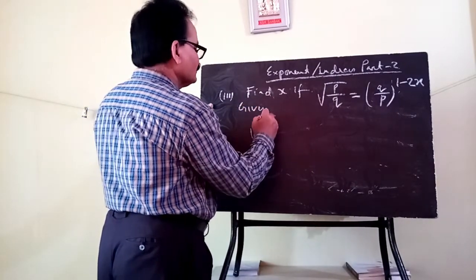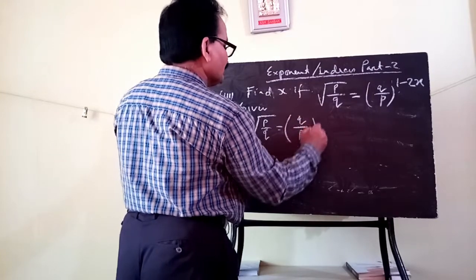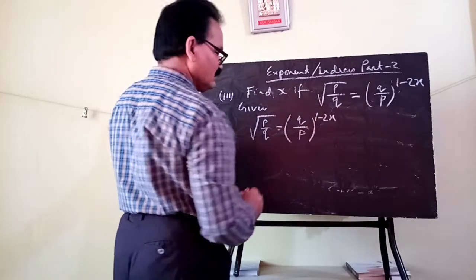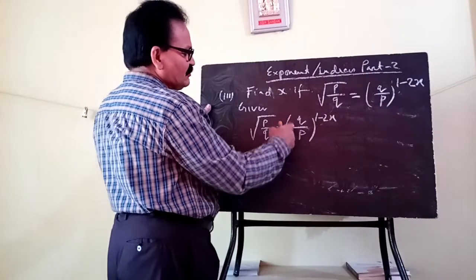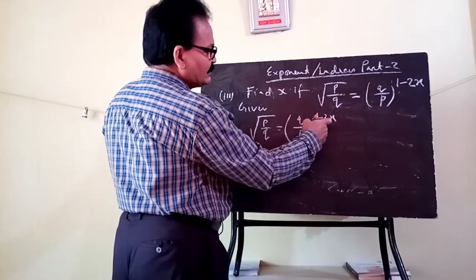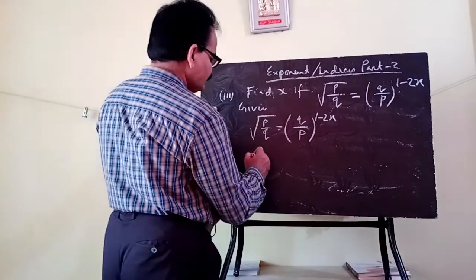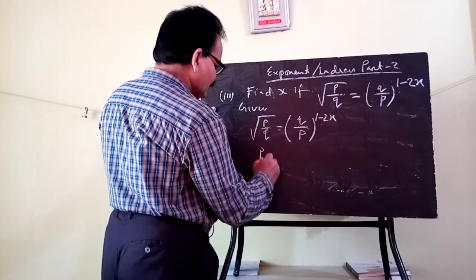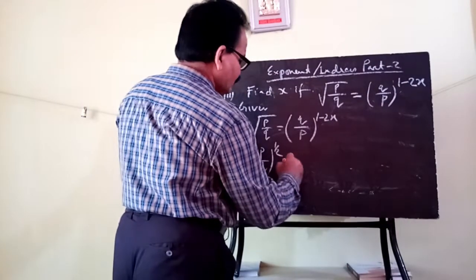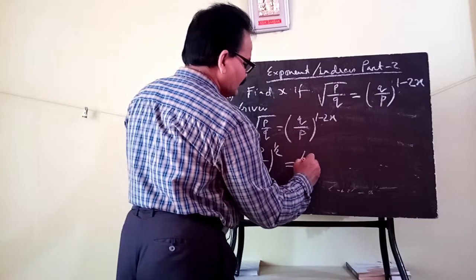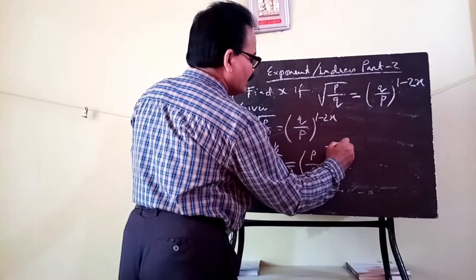Given: square root of p by q equals q by p to the power 1 minus 2x. Since the base on the left is p by q to the power 1 by 2, you need to change the base on the right. The base q by p is the reciprocal of p by q, so when you take the reciprocal, the power becomes negative: p by q to the power minus of 1 minus 2x.